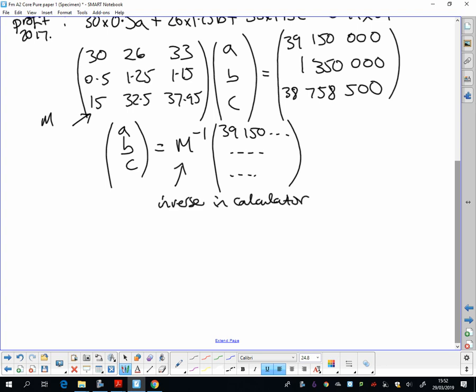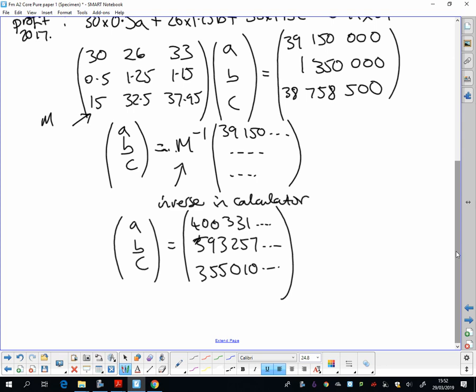And that should then get you to A, B, C equals - now this is always worth showing a few more significant figures before we round. So they're truncated rather than rounded.